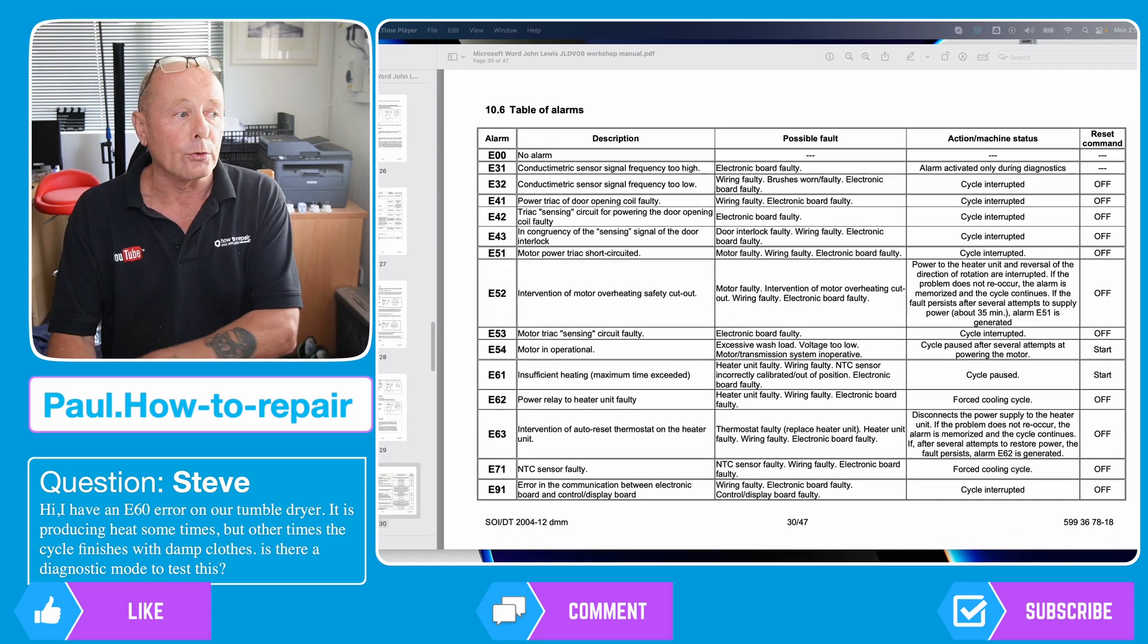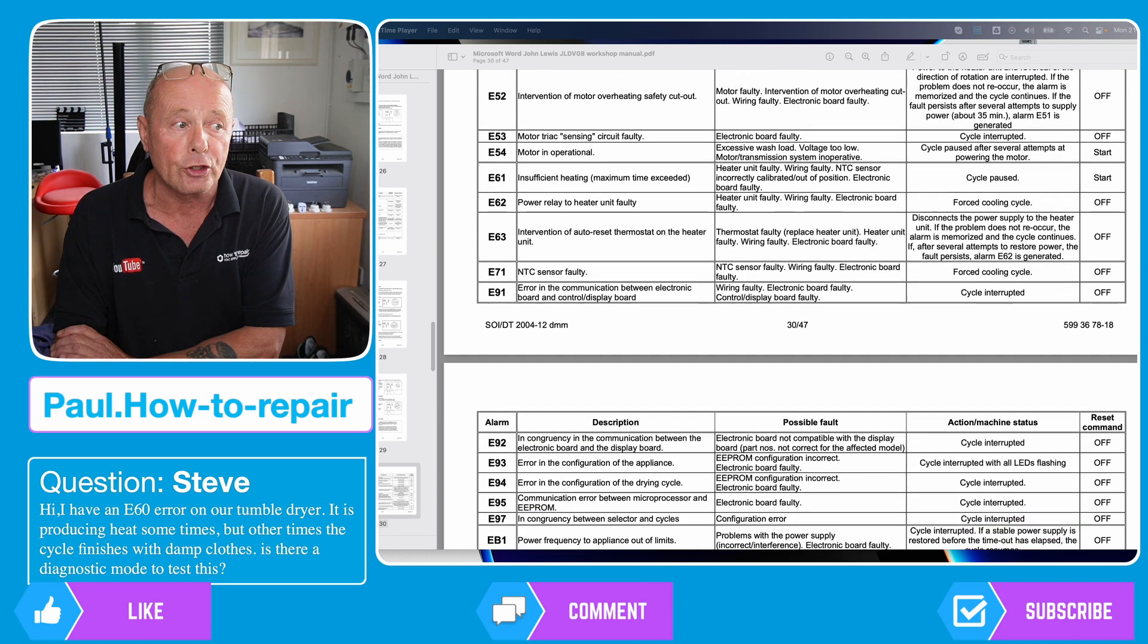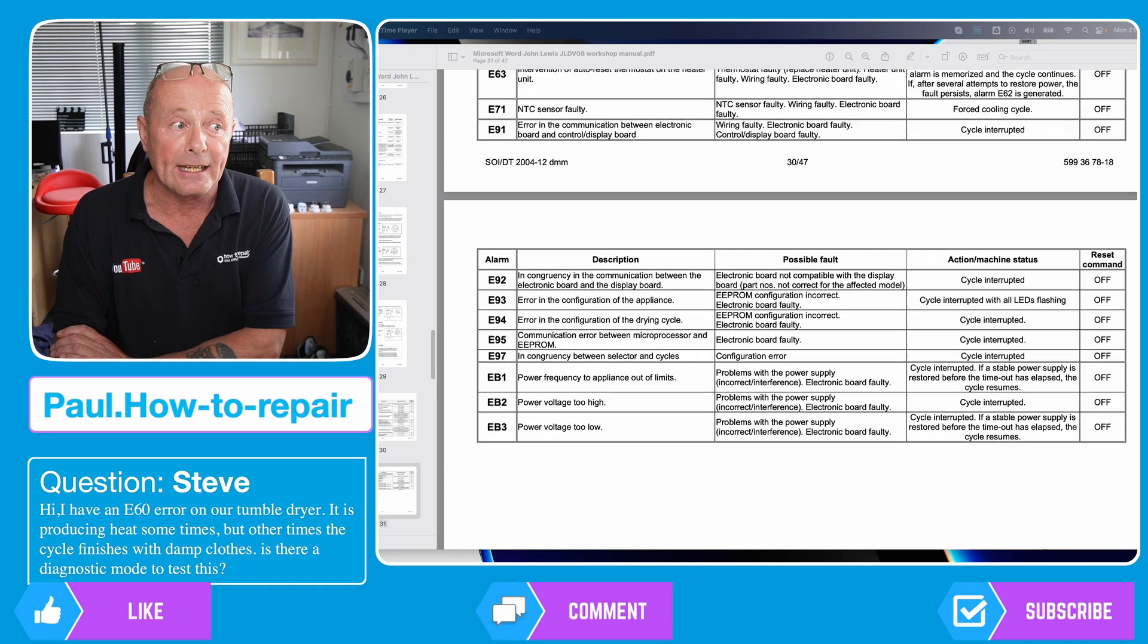Now here are the error codes. Now you said you had error code 60 and as you can see here on the workshop manual they don't actually show error code 60. Error code 60 is meaning it could be any one of these error codes 61, 62, 63 or it is telling you there is a general fault with the heating system. So really you want to check the whole heating system on the tumble dryer and also check the relays as well.